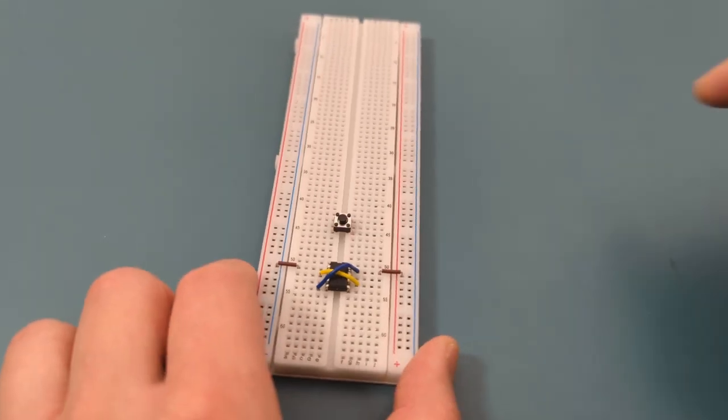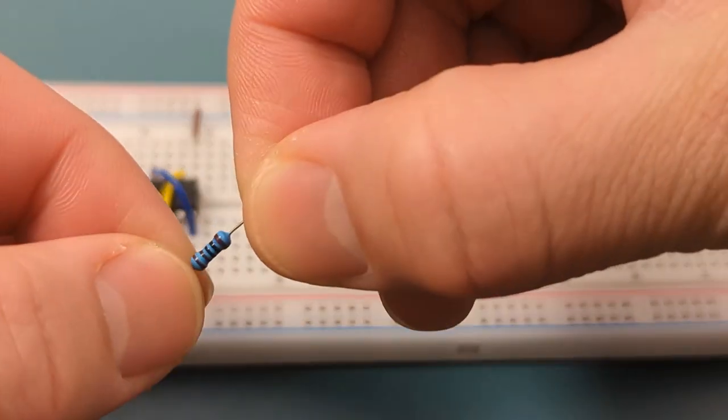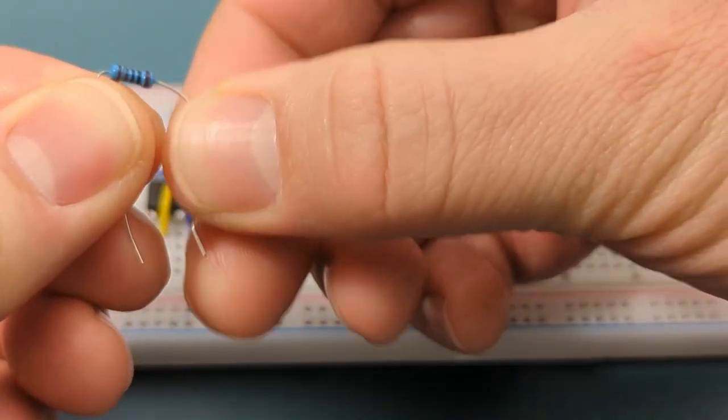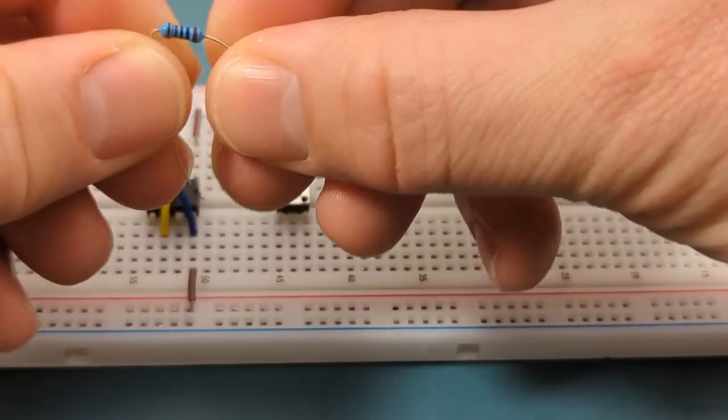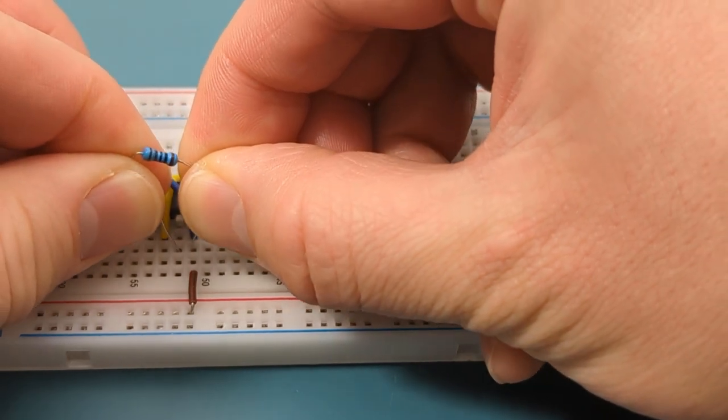Turn the breadboard to the side. Bend the ends of a 1000 ohms resistor. Insert the 1000 ohms resistor to pin 7 or discharge and pin 8 or VCC.